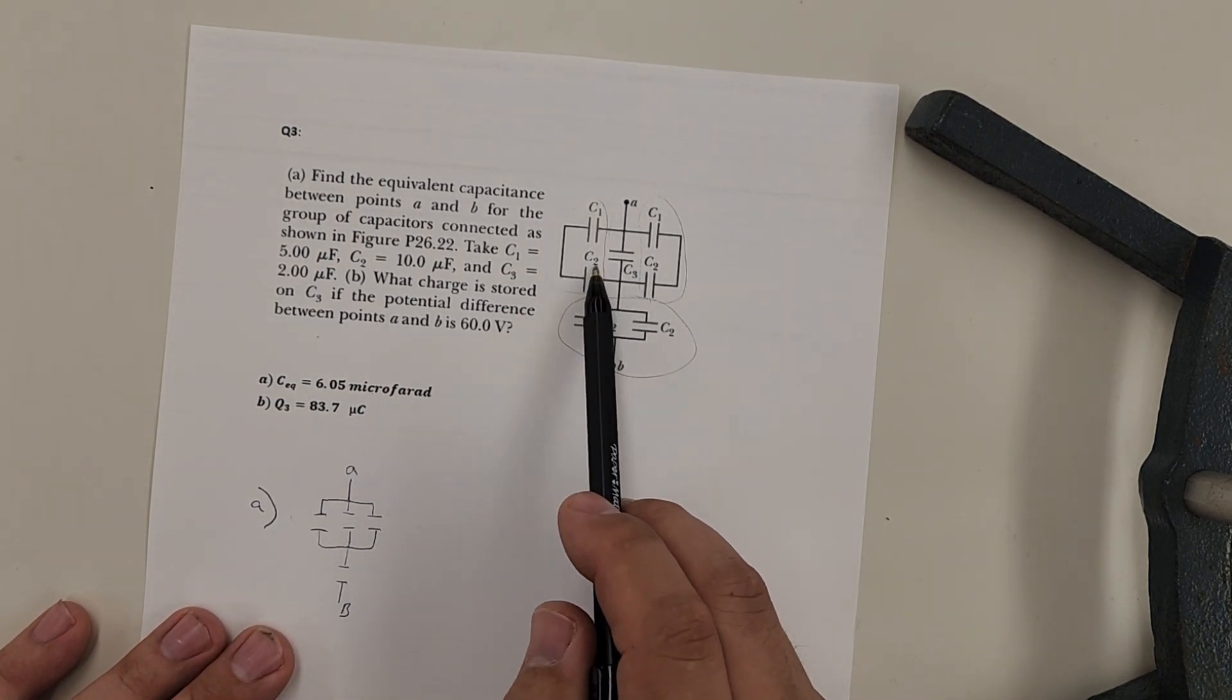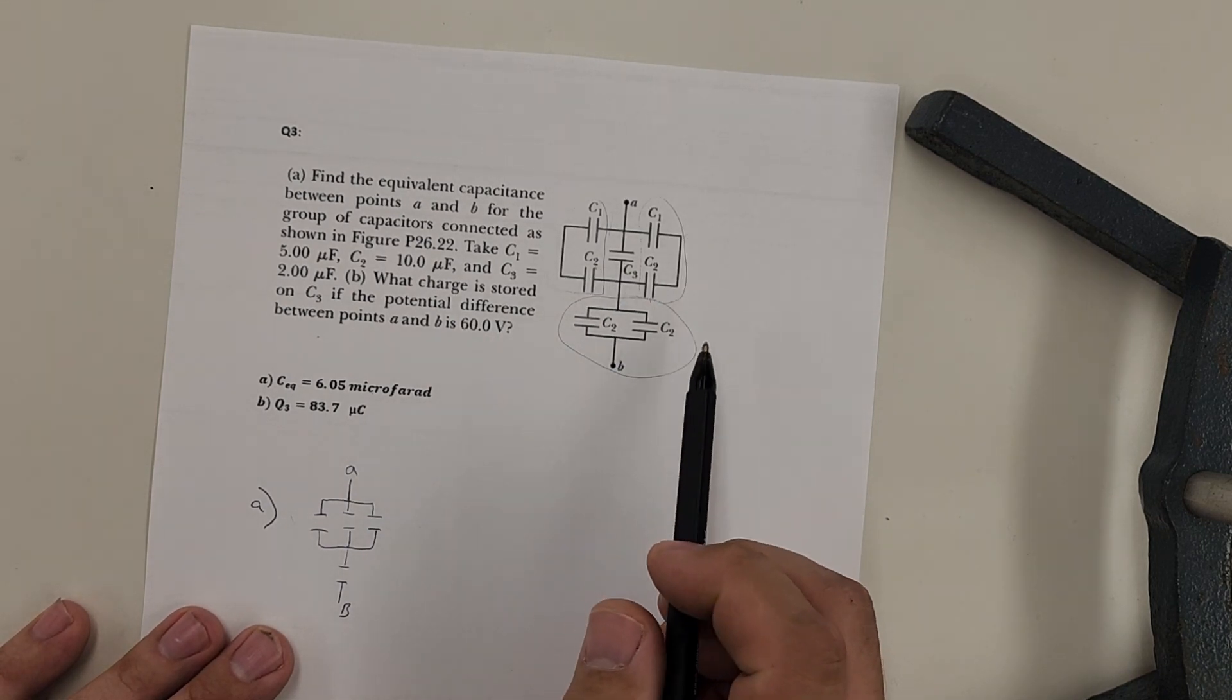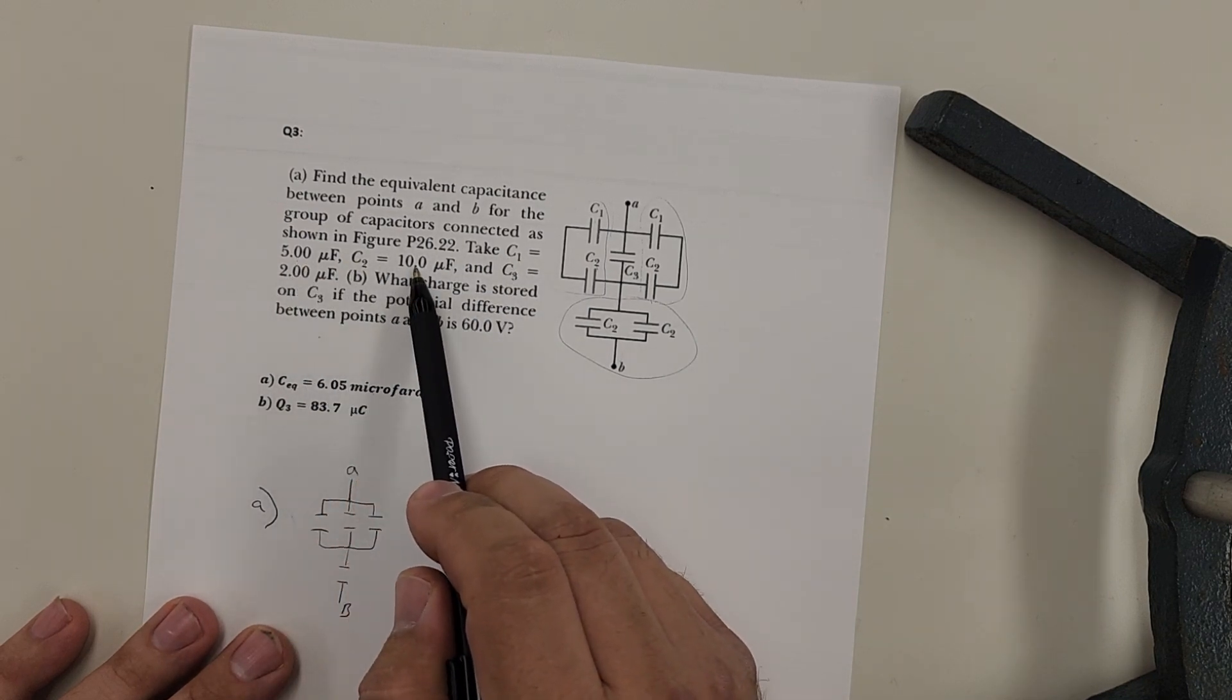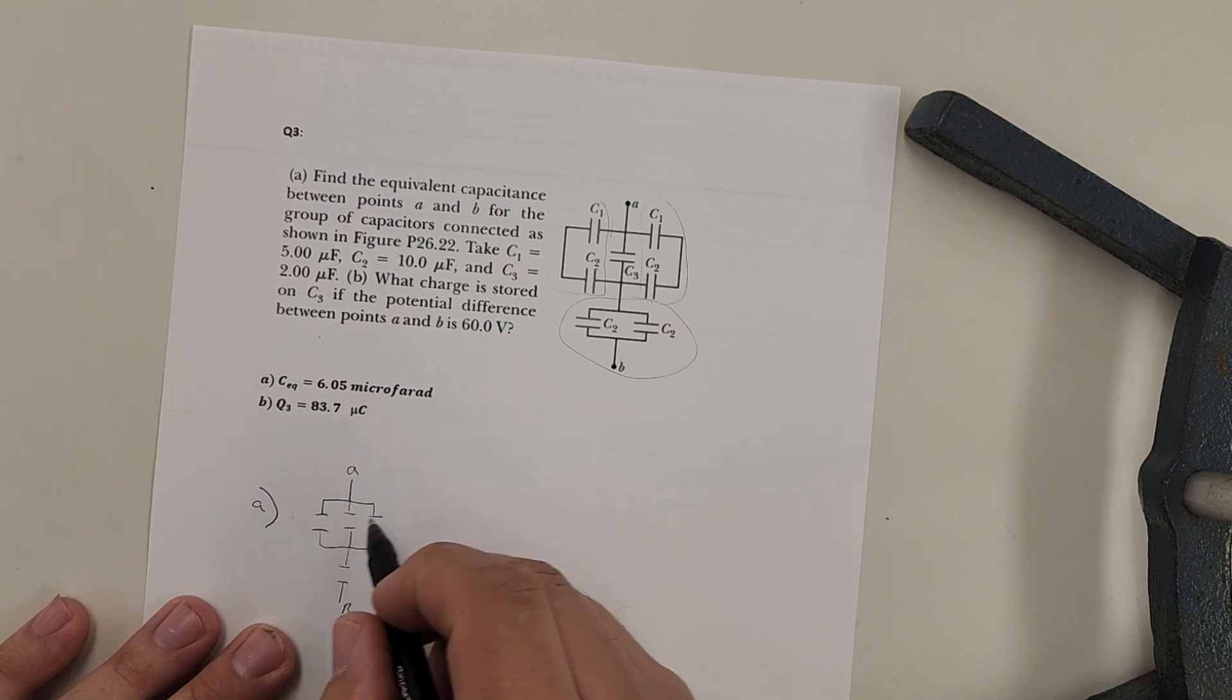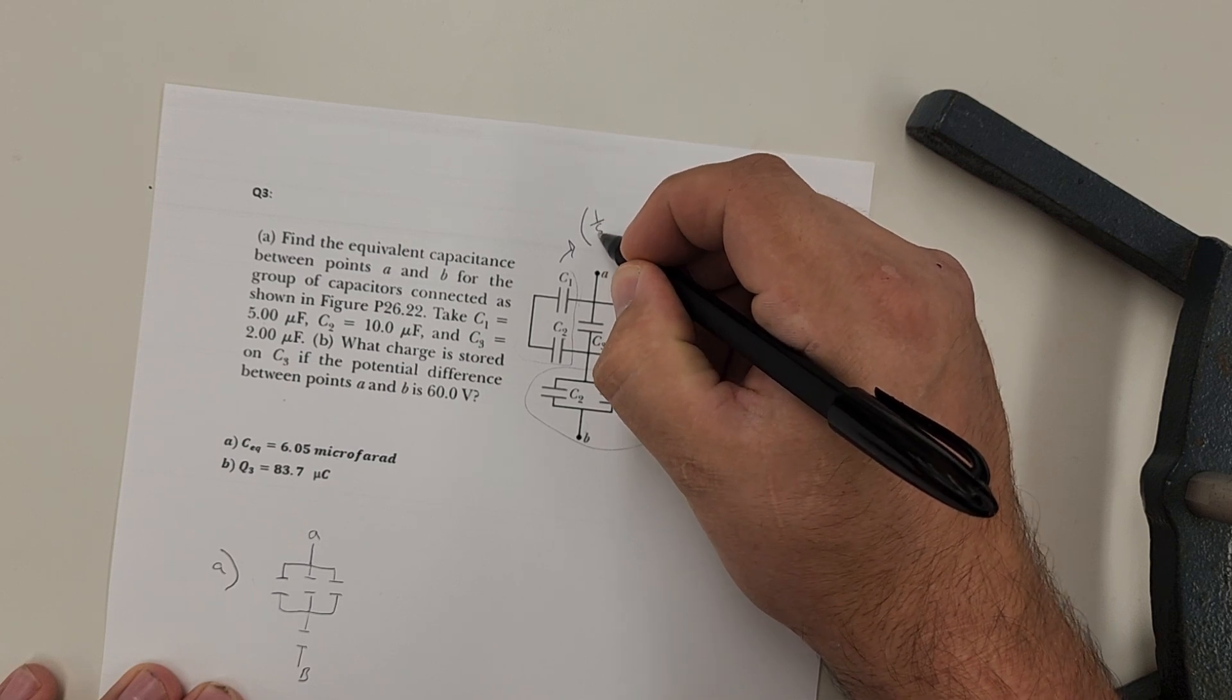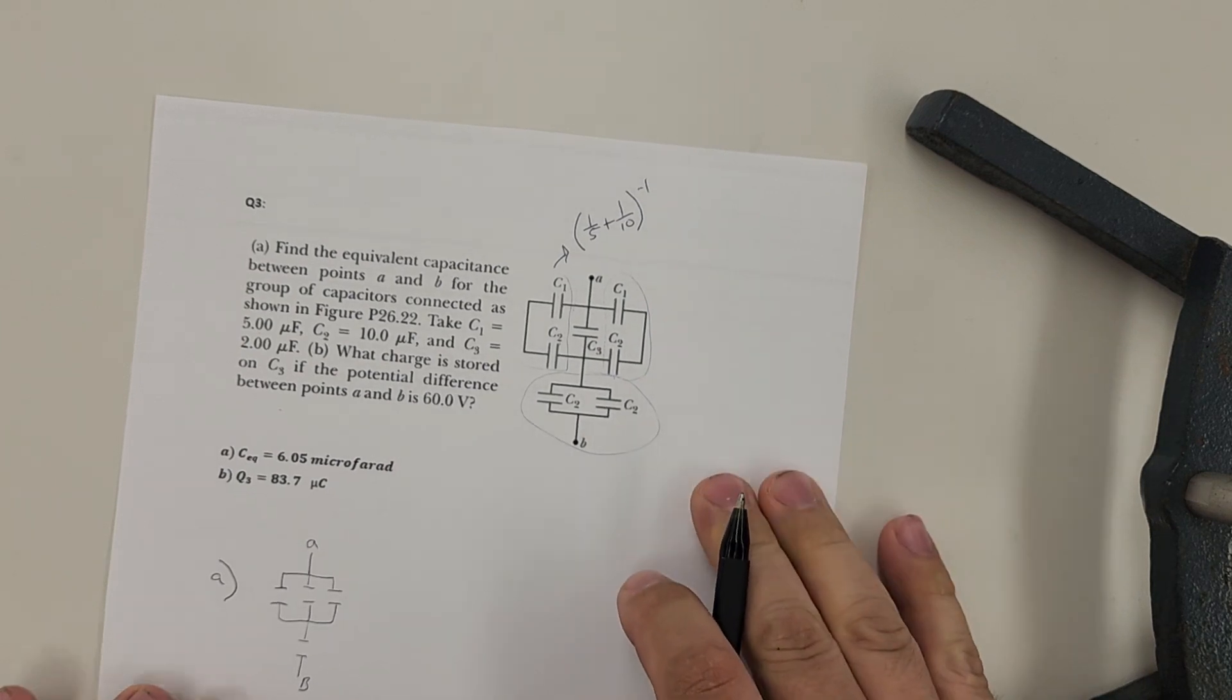So C1 and C2 were in series with each other. Okay. So C1 and C2 is 5 microfarad and 10 microfarad. Which means for this one, I'll just draw them up here. I'm going to have the inverse of one fifth plus one tenth to the negative first.